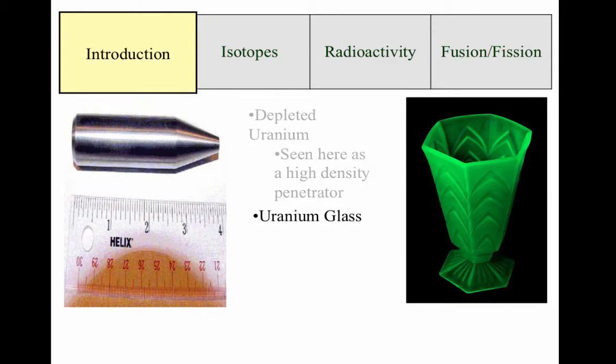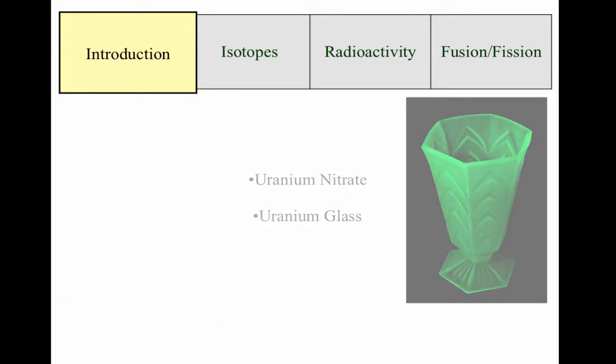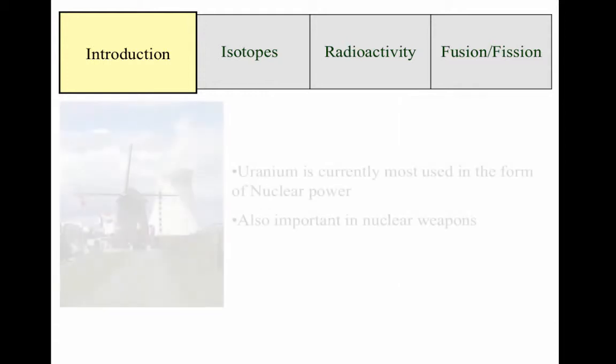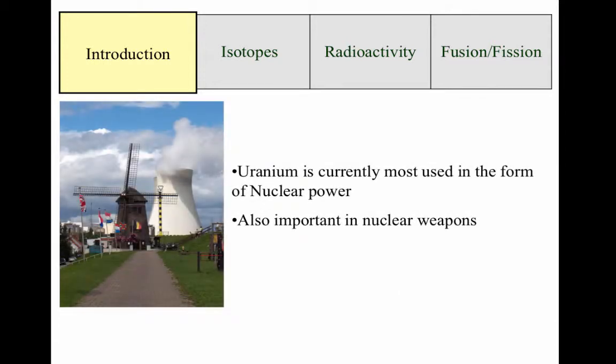Uranium is also seen in glass, pottery glaze, and in the form of uranium nitrate. Glass had been the most common use for uranium until its radioactive properties were discovered in 1896 by Henry Becquerel.